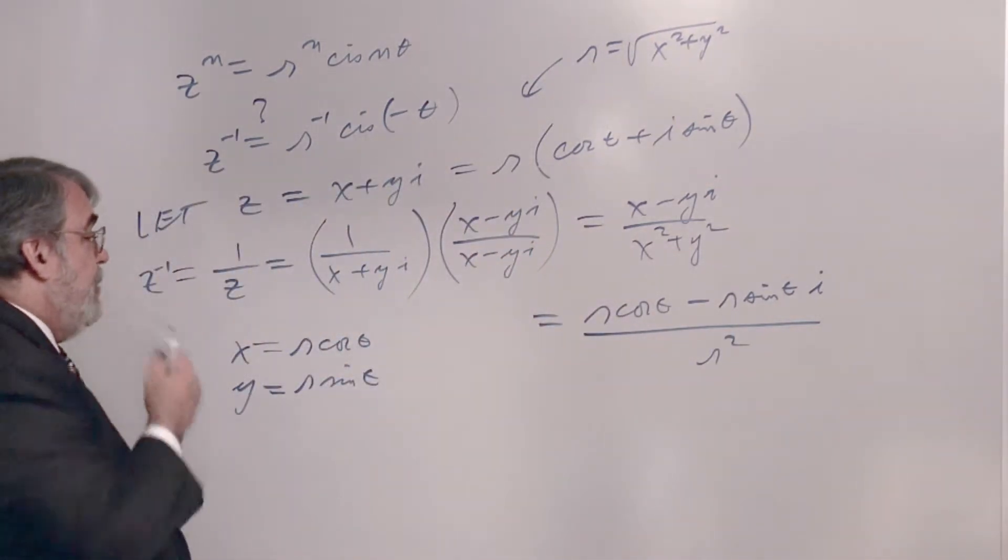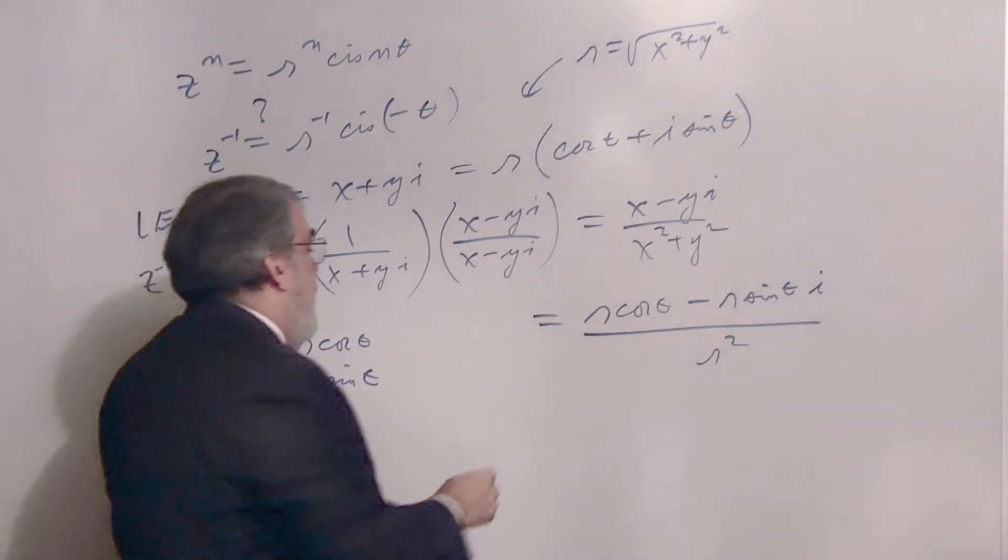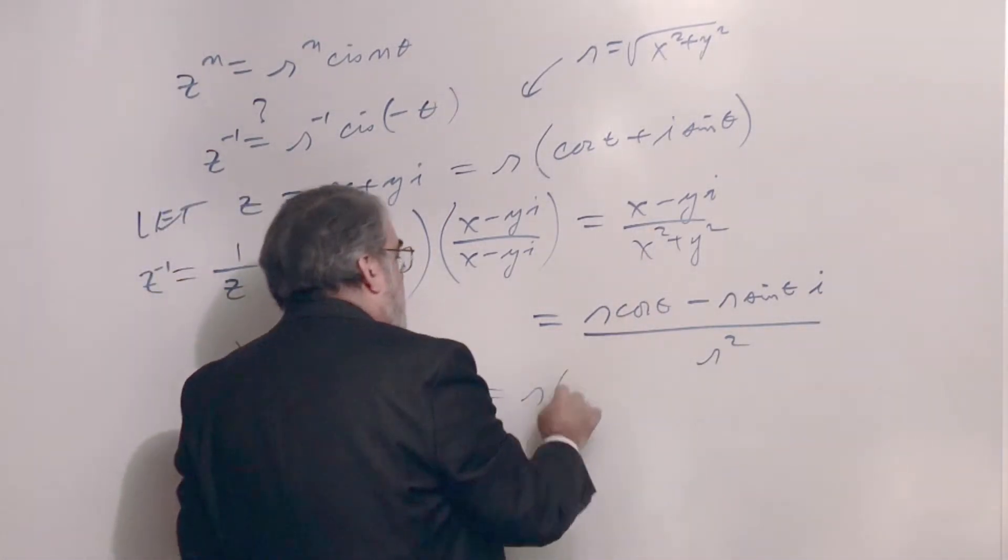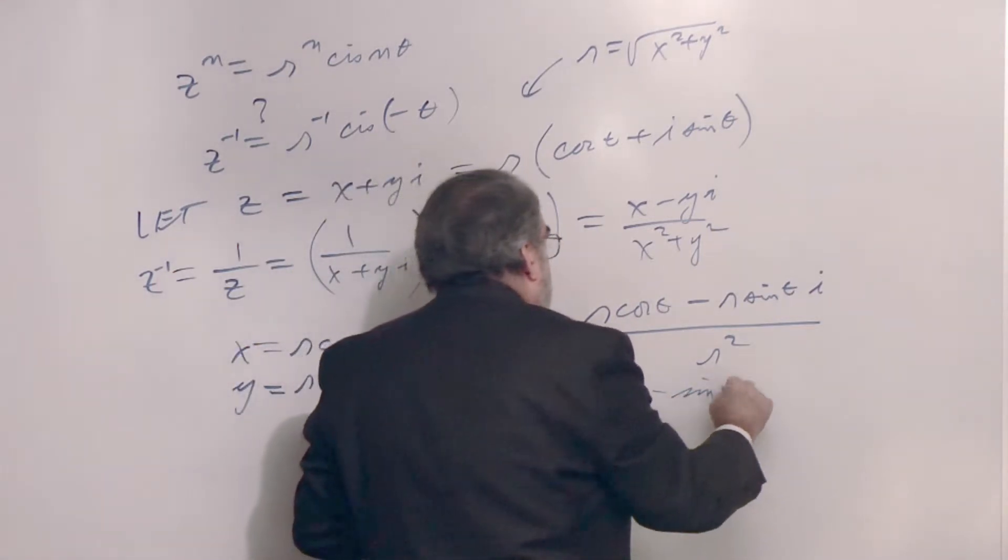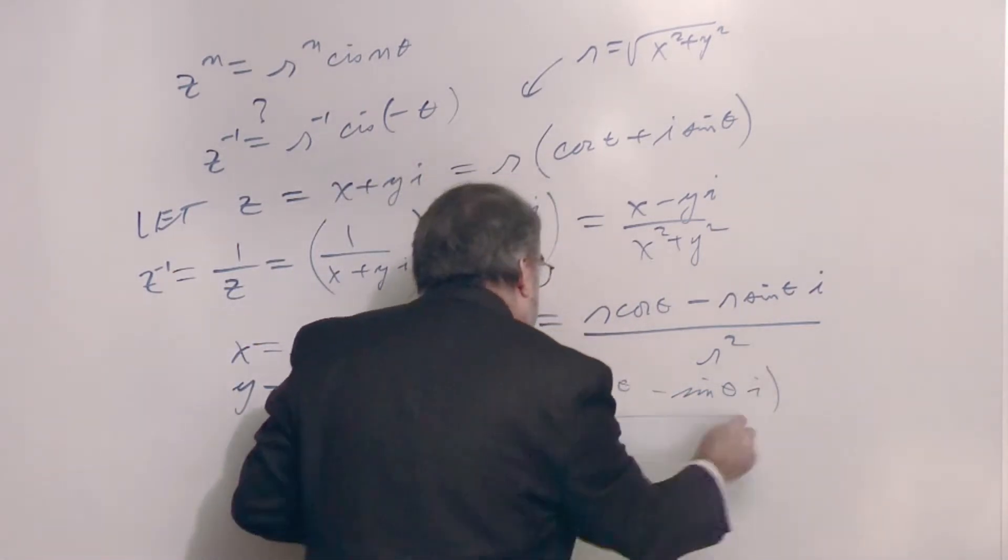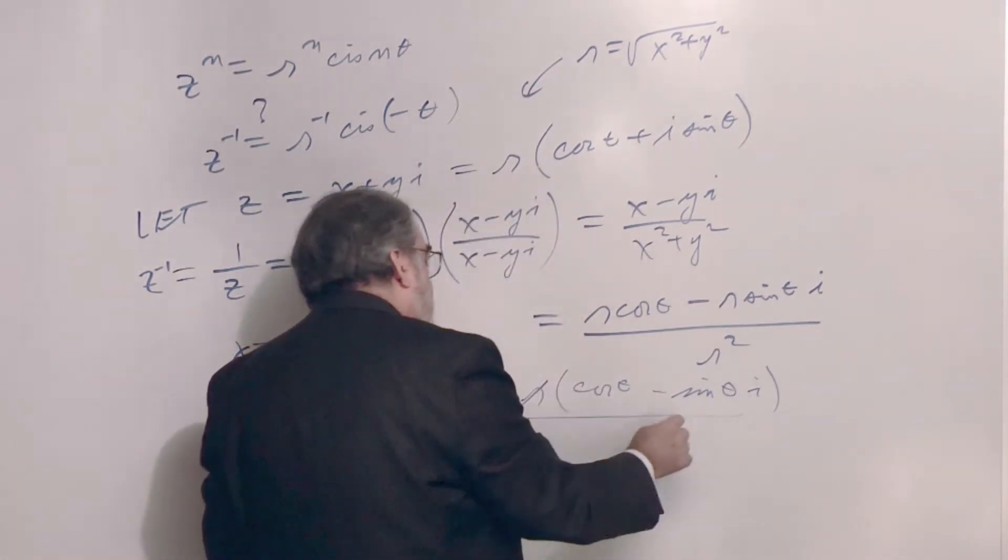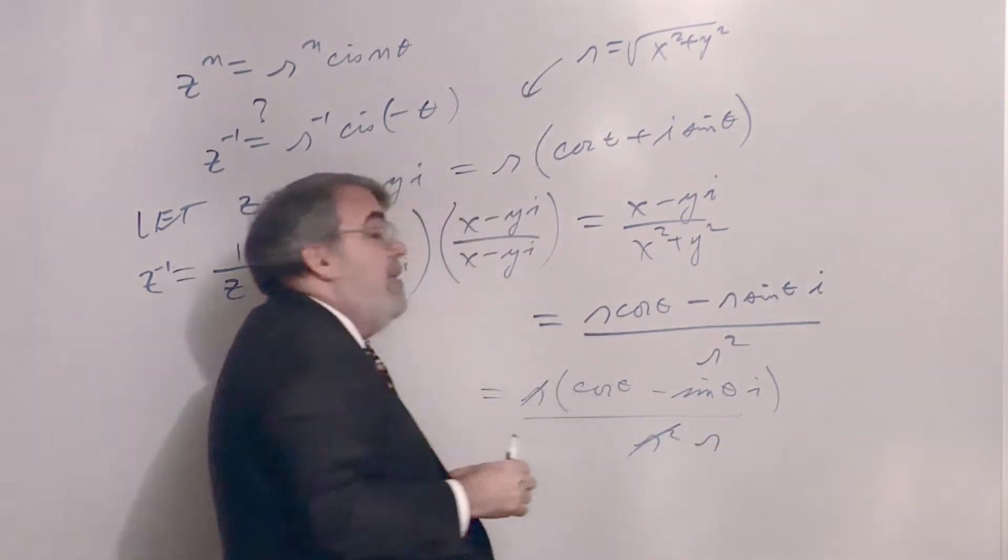Okay. Now then, if you factor the r out, I'm left with cosine theta minus sine theta times i divided by r squared. And the r cancels, leaving r for a denominator.